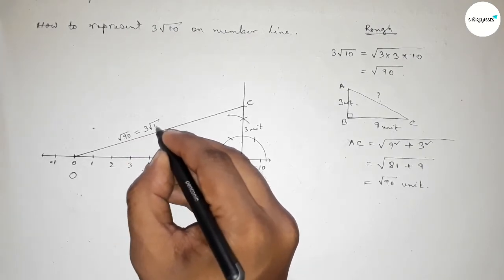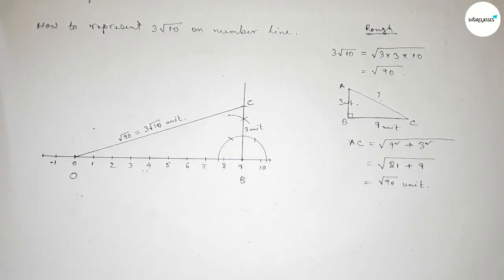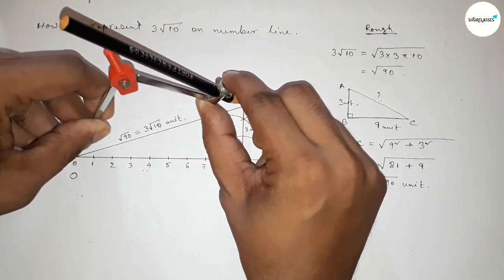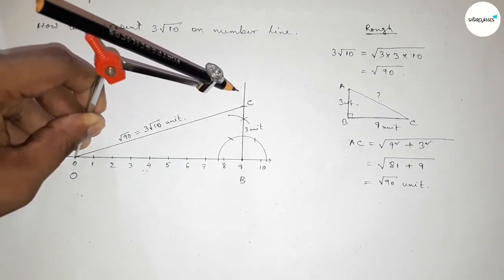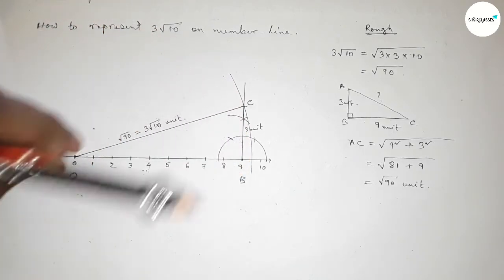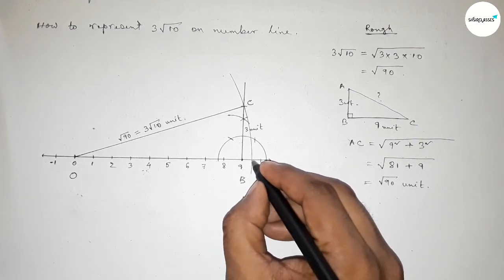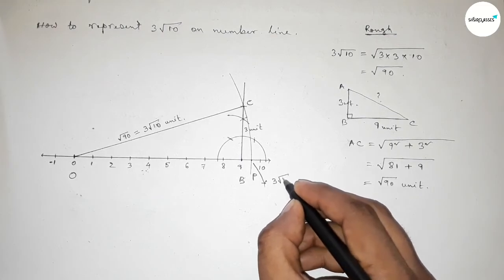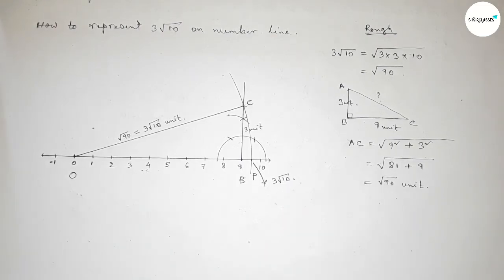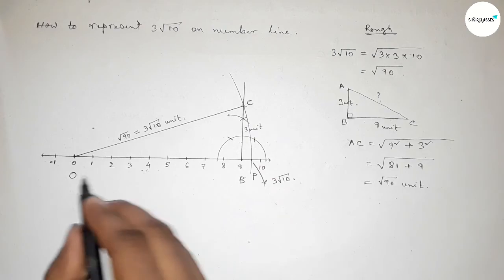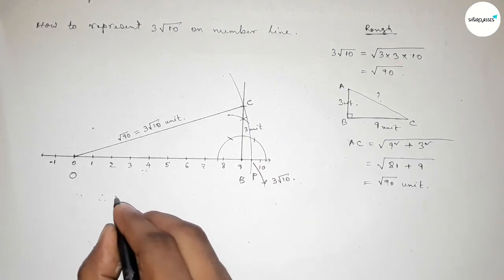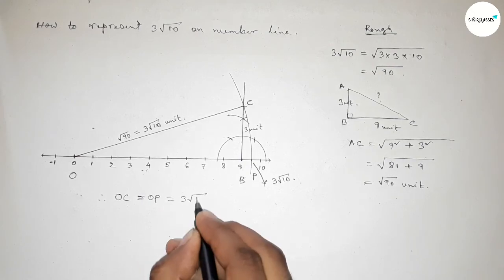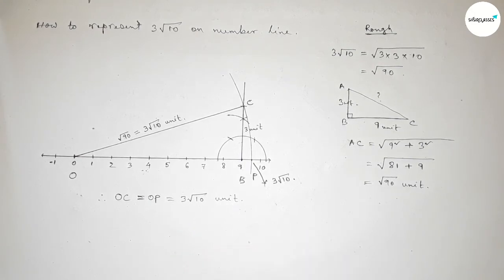So now by using compass, and now taking the length OC and drawing an arc which made the number line at a point here. So taking point P and this is 3 root 10 on number line.